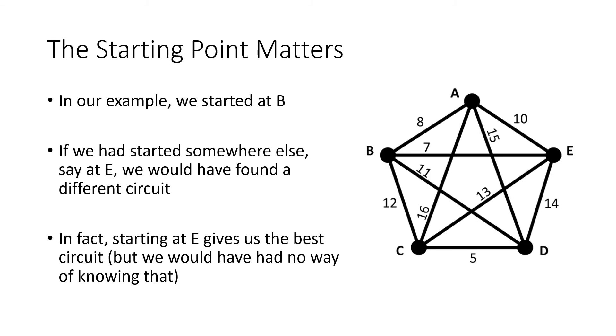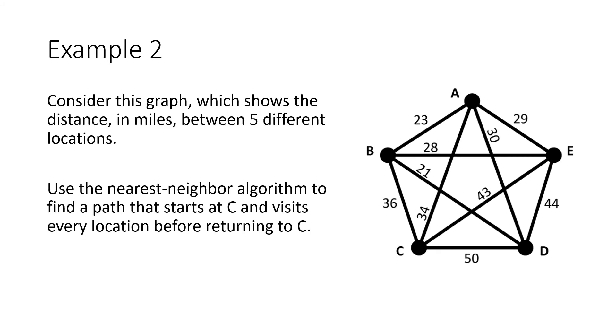And the starting point matters. In our example, in this graph, we started at B. But if we had started somewhere else, for example, if we had started over here at vertex E, we would have found a different circuit. So if you want to give that a try, pause the video and see if you can get that. But in fact, starting at vertex E gives us that best circuit that we had earlier in the video. But again, there's no real way to know that. There's no way to know what is a good starting point from just looking at the graph and looking at the labels.